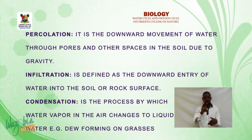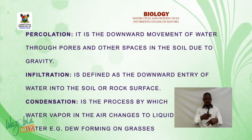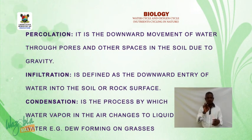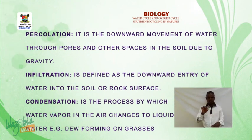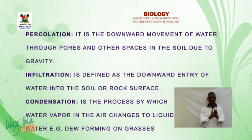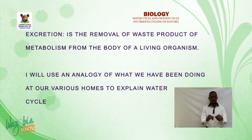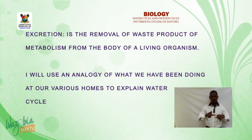Percolation is the downward movement of water through pores and other spaces in the soil due to gravity. Infiltration is defined as the downward entry of water into the soil or rock surface. Condensation is the process by which water vapor in the air changes into liquid water — for example, dew forming on grasses. Excretion is the removal of waste products of metabolism from the body of a living organism.